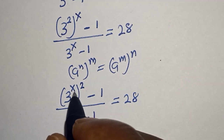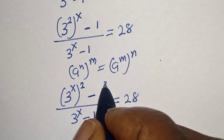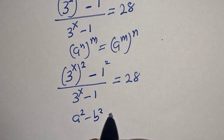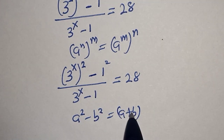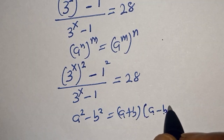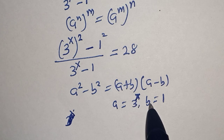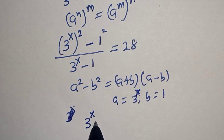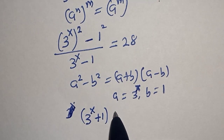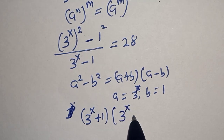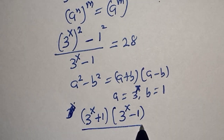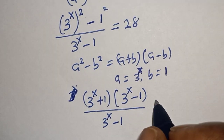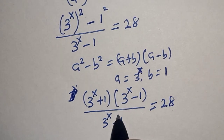Then this becomes 3 raised to power s, squared, minus 1 squared, which is a perfect square. Take note of the rule: a squared minus b squared is equal to (a plus b)(a minus b). Here a is equal to 3 raised to power s and b is equal to 1. Then the numerator becomes 3 raised to power s plus 1, bracket 3 raised to power s minus 1, divided by 3 raised to power s minus 1, is equal to 28. We can cancel the (3^s minus 1) terms.